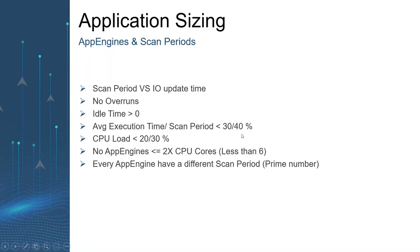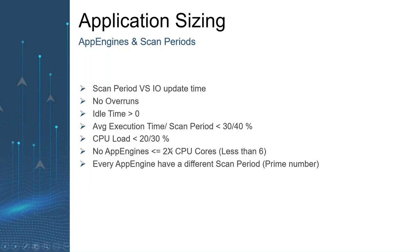After installation, there are a few things to monitor. We'll talk about the scan period and app engines. Always look at the scan period and IO update time — check for overruns, and make sure there are no new overruns incrementing continuously. Also check idle time. The average execution time over scan period should be lower than 30 to 40 percent. If it's bigger than 70 percent, you have to react — your system is overloaded. Generally, CPU load should be 20-30 percent, not more.